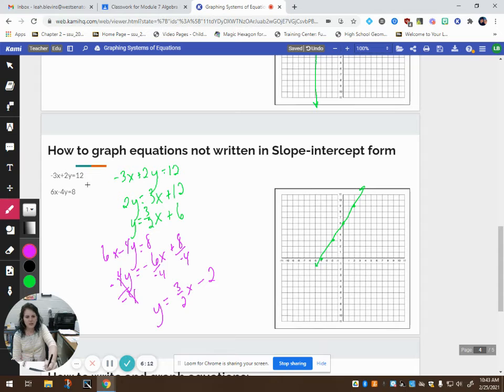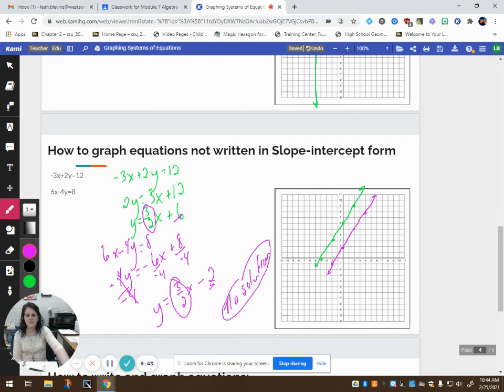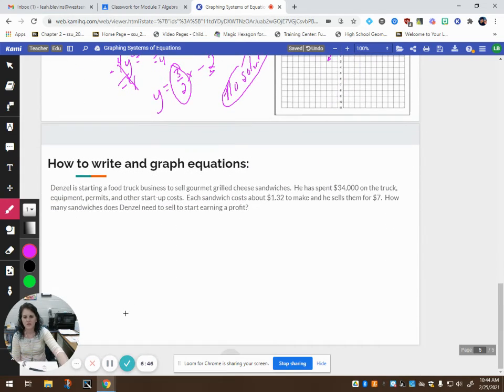And I get y equals 3 halves x minus 2. So I'm going to start here at negative 2. And my slope tells me to go up 1, 2, 3, over 2. Up 1, 2, 3, over 2. Down 1, 2, 3, over 2. You can see that these lines run right along beside each other. They're never ever going to intersect. So this has no solution. And I could have figured that out without graphing it just by looking at the equations. Because they have the exact same slope, but they have different y-intercepts. So I know they are parallel lines and they are never going to intersect.